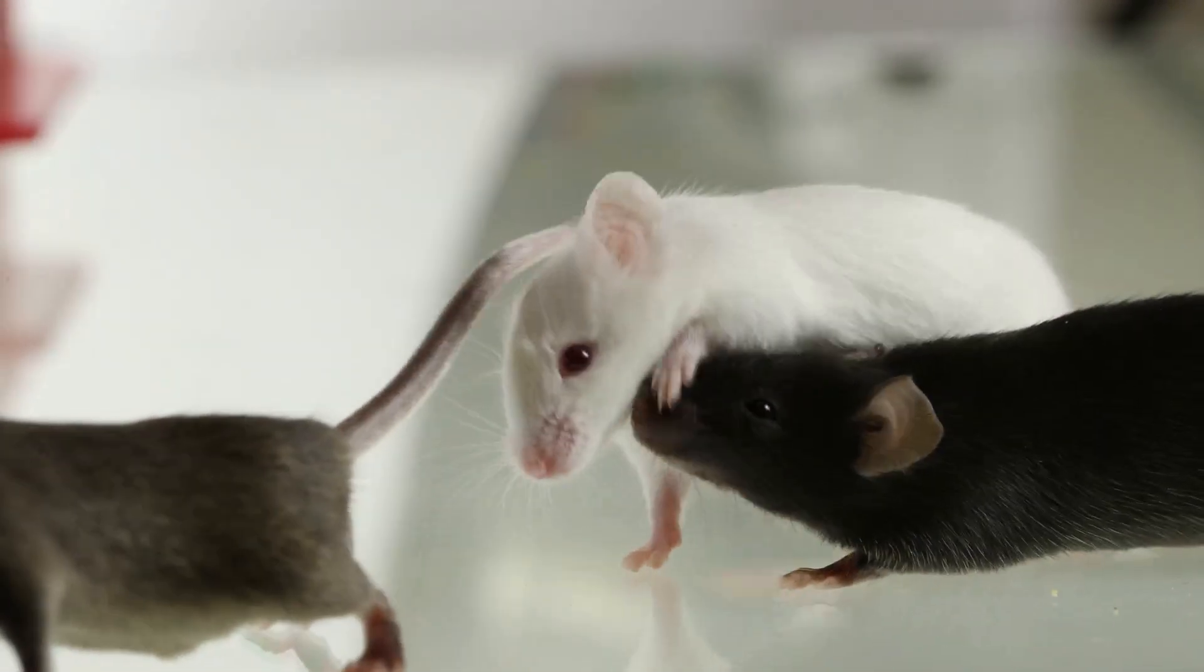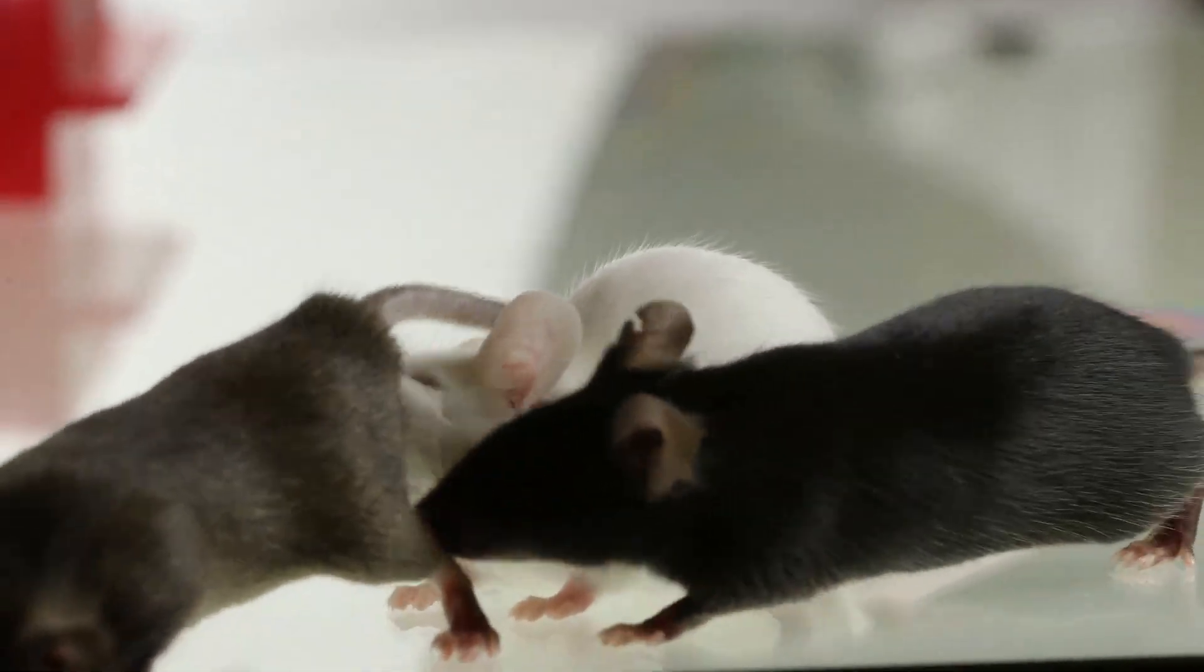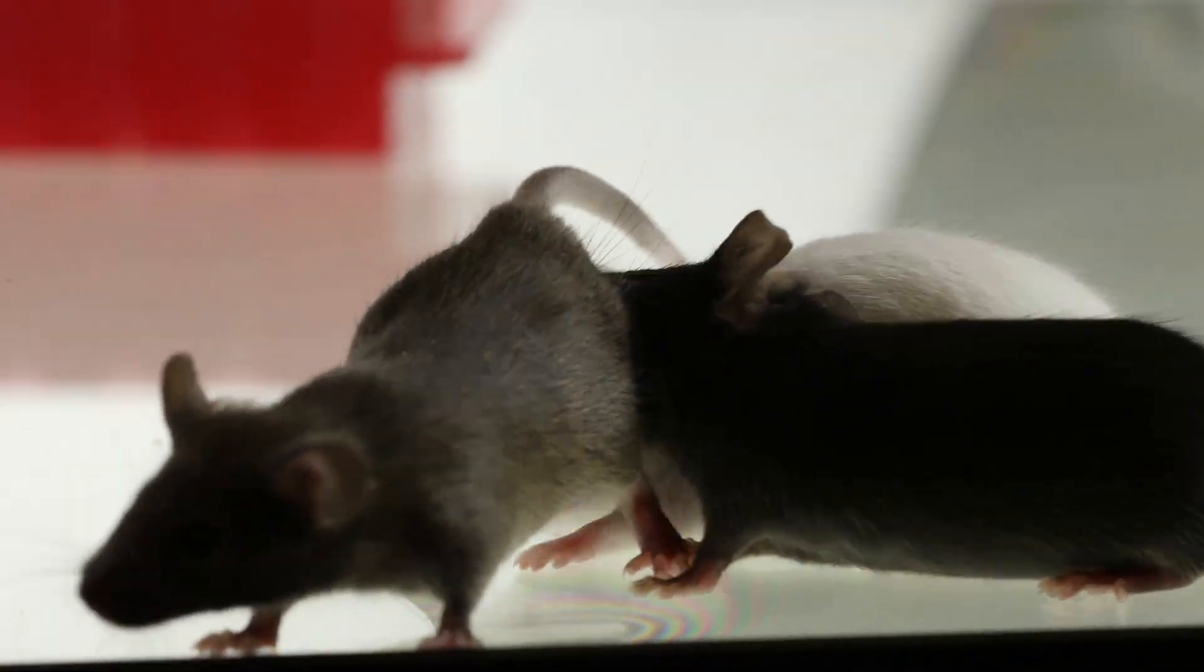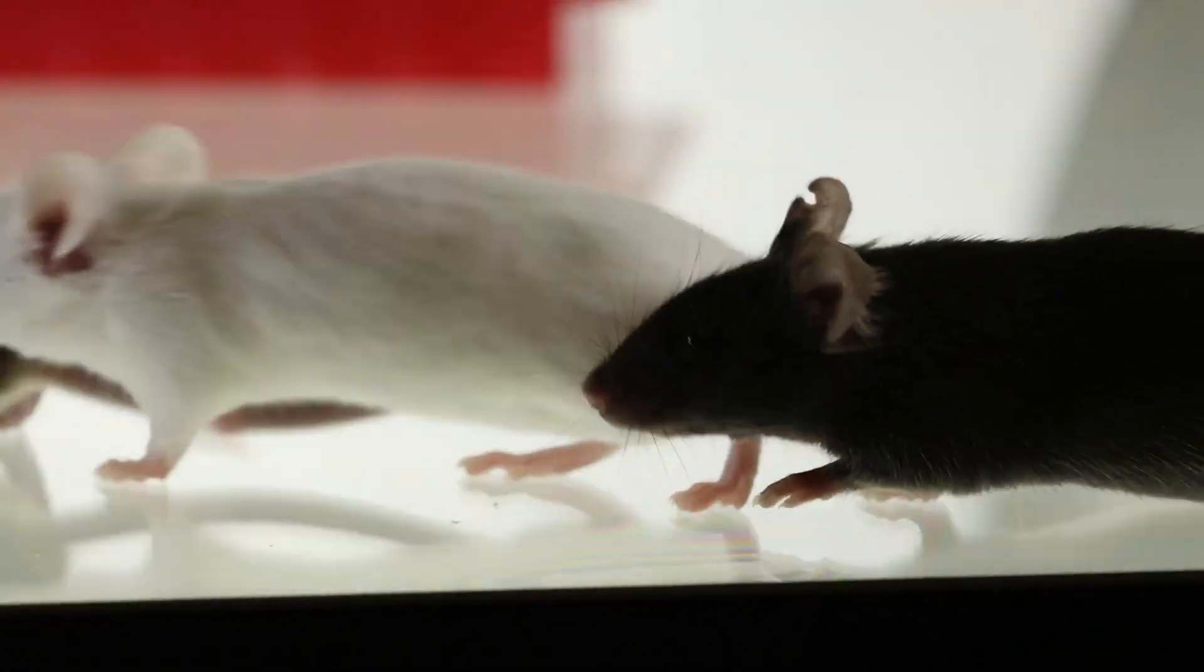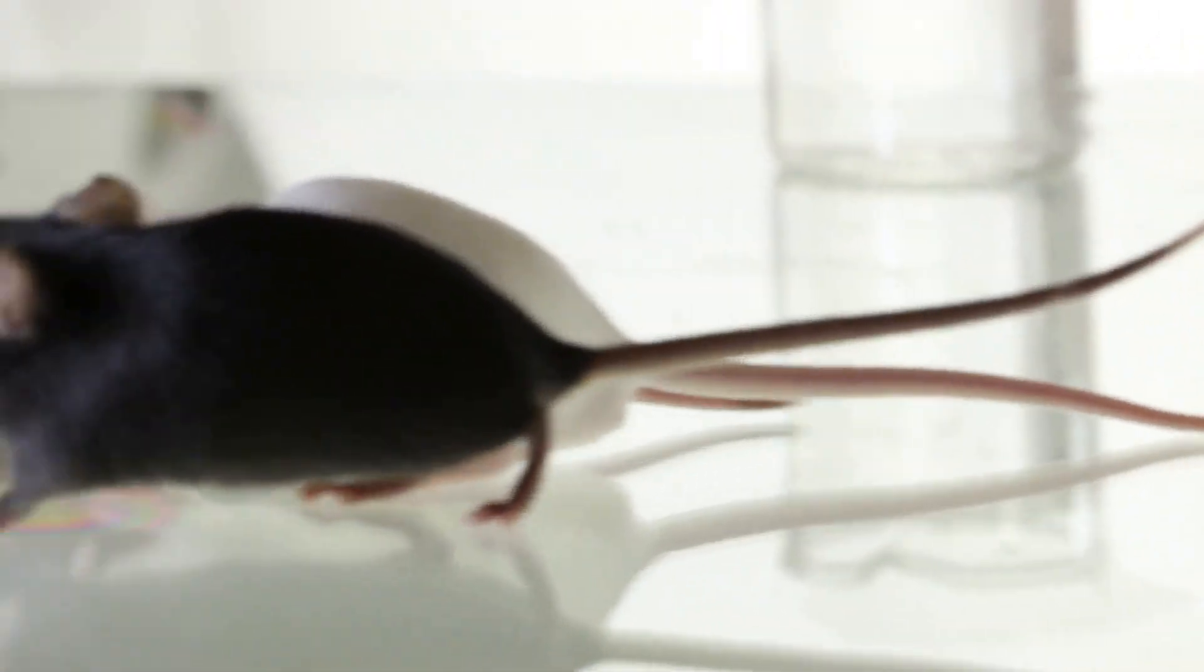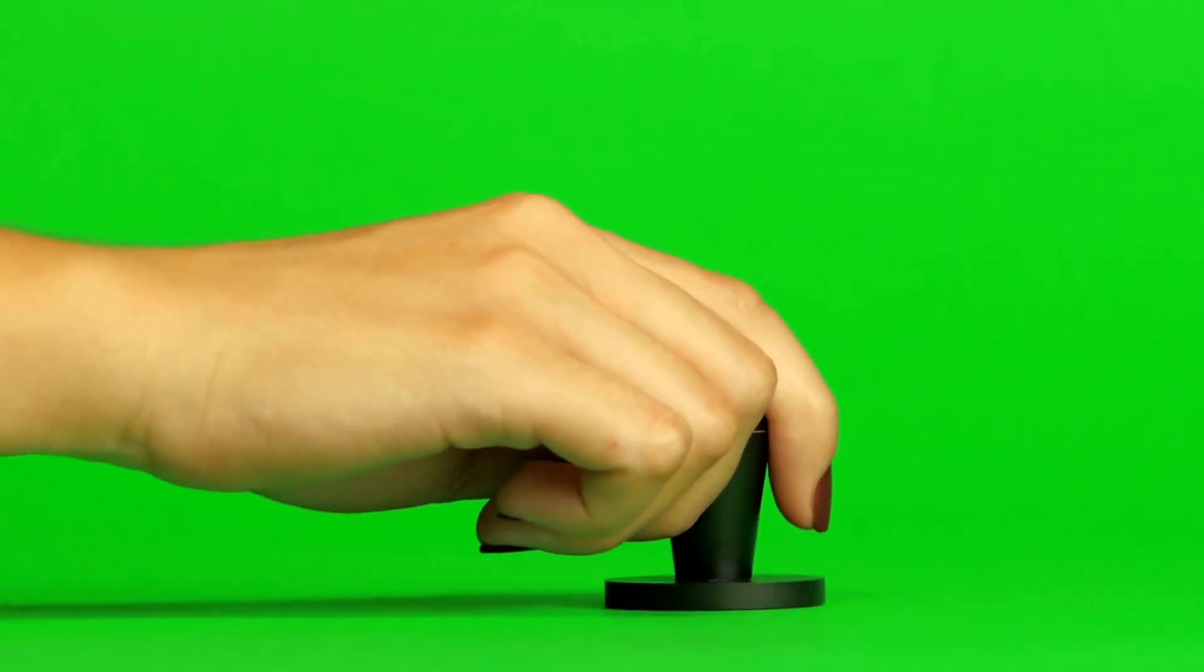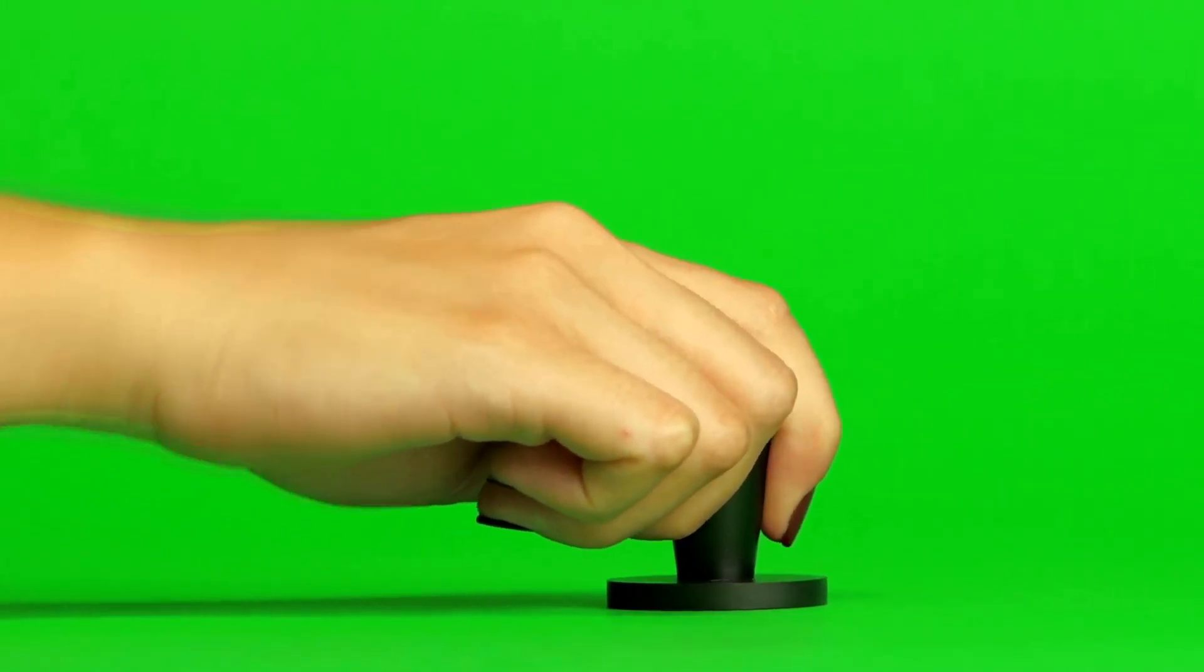These mice carry a gene that makes them yellow, obese, and prone to cancer and diabetes. Scientists took a group of pregnant agouti mice and fed them a diet rich in nutrients that the body uses to make epigenetic tags, things found in foods like leafy greens and beans.